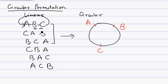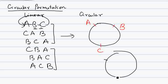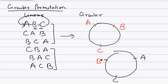Similarly, the orders CBA, BAC, and ACB are all equivalent to one circular permutation. So again, these three linear orders reduce to a single distinct circular arrangement.